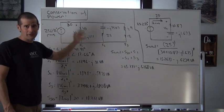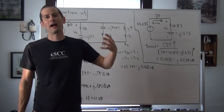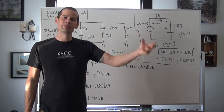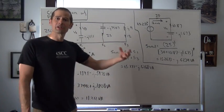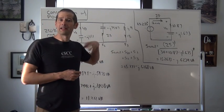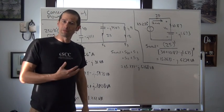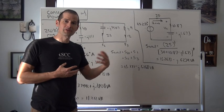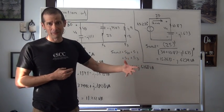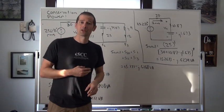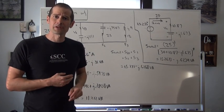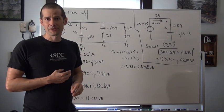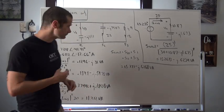So if we consider the conservation of power, it basically states that the amount of power actually supplied by the source is equal to the individual powers delivered to each element within the circuit. We're going to look at a comparison between the original circuit and four specific powers, take the algebraic summation of all those powers, and see if that compares correctly to the power calculated directly from the source. The law of conservation of power states that the algebraic summation of all powers delivered to each element is equal to the power supplied by the source.